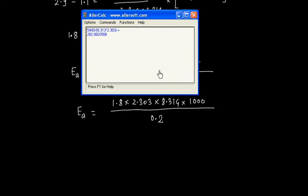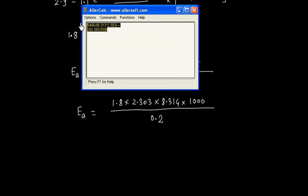So let us calculate this value. We have 1.8 multiplied by 2.303, 8.314, and this divided by 0.2.